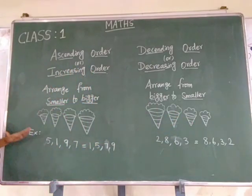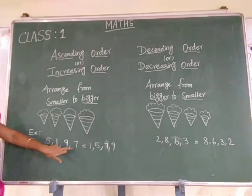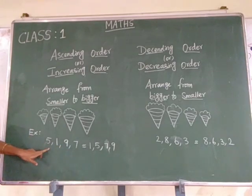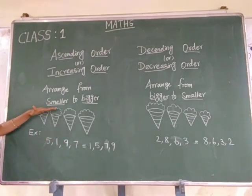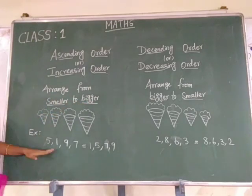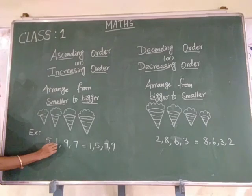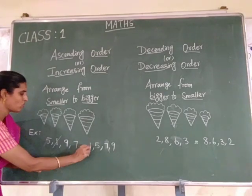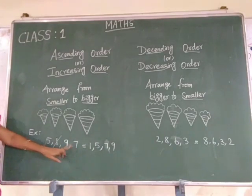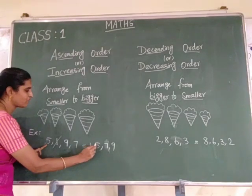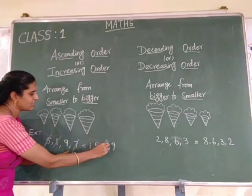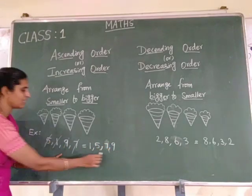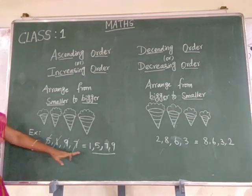We can apply this to numbers also. For example: 5, 1, 9, 7. Now tell me, which one is smaller? Because we are going to arrange these numbers in ascending order — smaller to bigger. 1 is the smallest one here, so first you write 1. The next remaining numbers are 5, 9, 7. Which one is smaller? 5. Then you write 5. Next: 9 and 7 — which is smaller? 7. Then write 7. The last one is 9. Now these numbers are arranged in ascending order.